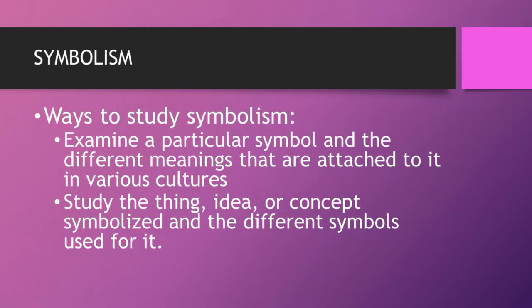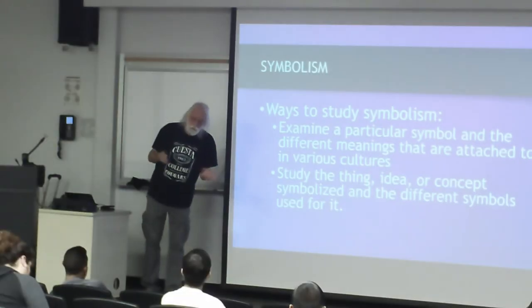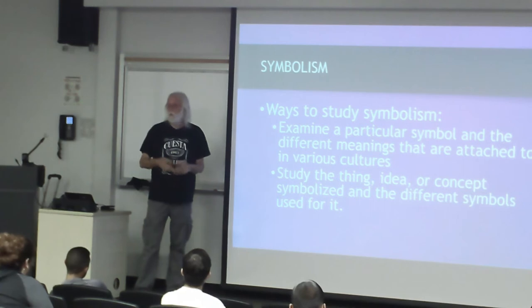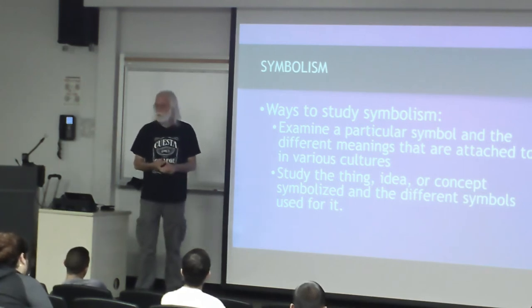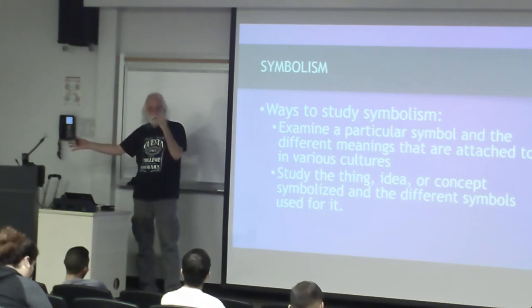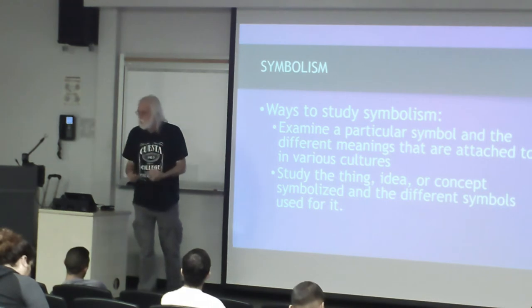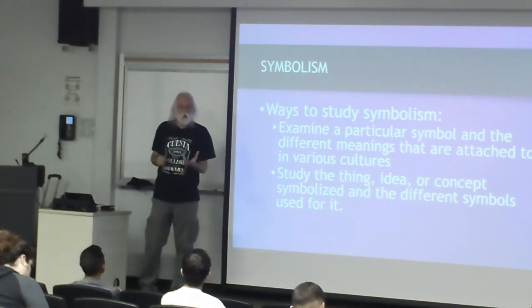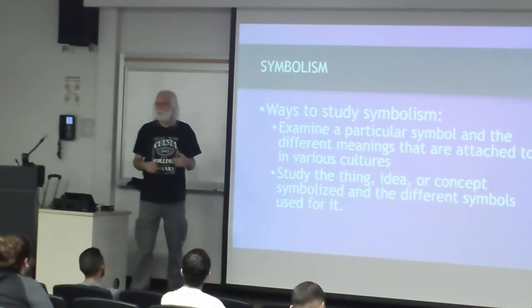We can approach symbols from two different ways. We can study a symbol and all the ways it's used in multiple cultures — the swastika would be a perfect example. We automatically think 'Nazis,' but Zoroastrians use the swastika, parts of India use it, Jainism uses a version as their primary holy symbol, and Native Americans use the swastika. Or you can look at the signified — what's being signified — and look at all the different symbols that signify that across cultures. Both approaches tell you an awful lot about the cultures you're looking at.